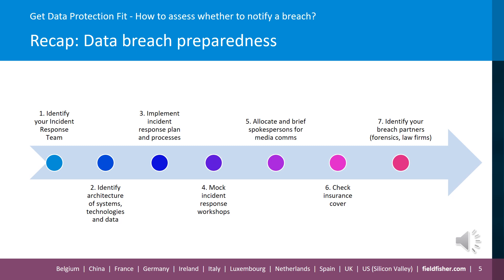Number three: incident response plans and processes. It's very important to have an incident response policy or plan which clearly sets out the steps that need to be taken by the incident response team. Within this should be clear guidance on how to undertake your risk assessment. Number four: mock incident response workshops. Members of your incident response team should ideally undergo training, including response workshops that take them through a mock incident. Number five: identify a spokesperson for communications with the media, regulators, government bodies, data subjects, and employees. Some clients also find it helpful to prepare draft media responses.